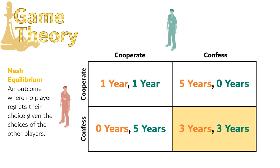But let's walk through the logic that the definition gives us. A Nash Equilibrium is an outcome where no player regrets their choice, given the choices of the other players. Let's start by looking at this outcome here. Is this a Nash Equilibrium? Here's how we would check: we look at each player in isolation and think, will they regret their choice?